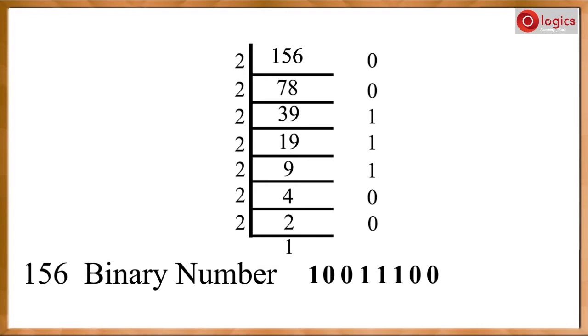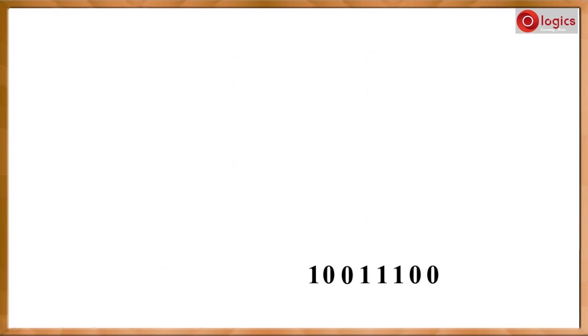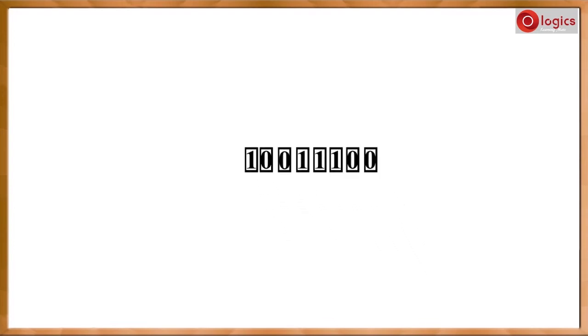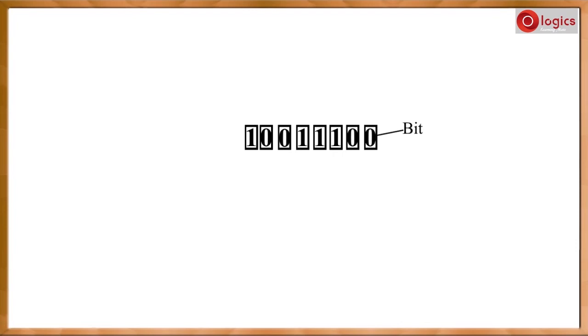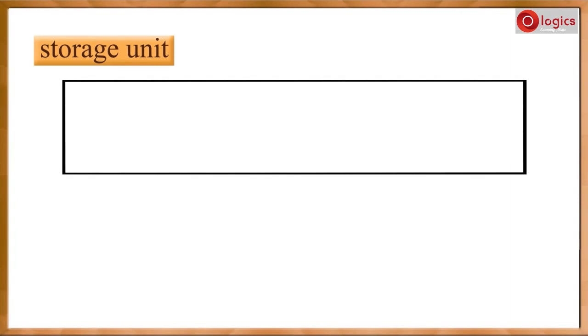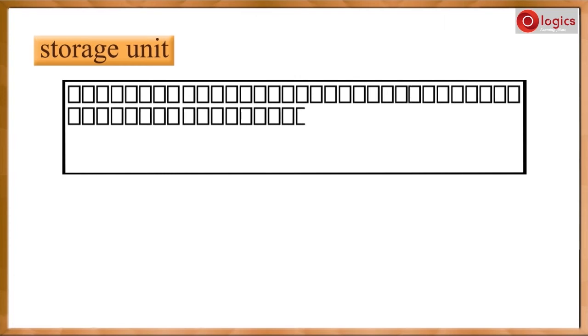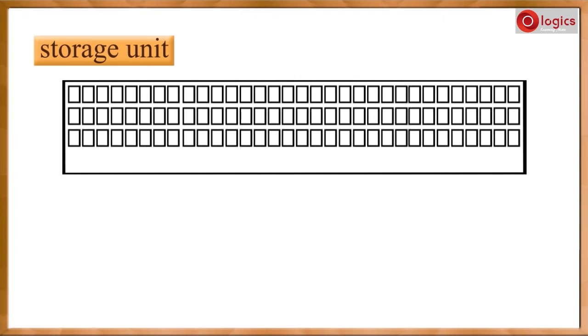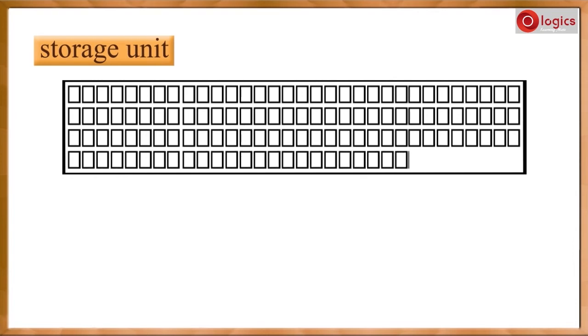Now let us understand how binary numbers are stored inside a computer. To store a binary number — either zero or one — you need one bit in memory. To store this binary number, you need eight bits in memory. Let us say this is the storage unit of your computer. The total storage is built on bits. Each bit allows you to store a binary digit — either zero or one.